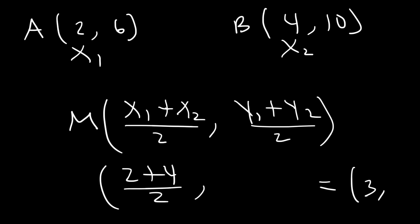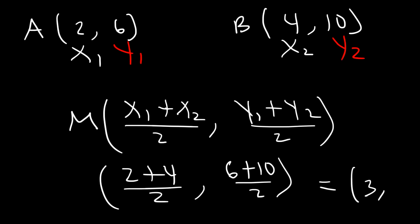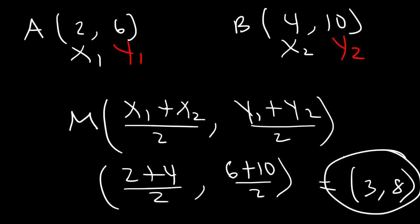Now let's do the same thing with the y-values. Let's call this y1 and y2. The midpoint between 6 and 10 — instinctively, you can see — is 8. If you were to add 6 and 10 and then divide by 2, you should get 8. 10 plus 6 is 16; 16 divided by 2 is 8. So that's how you can find the midpoint between two points. In this example, it's (3, 8).